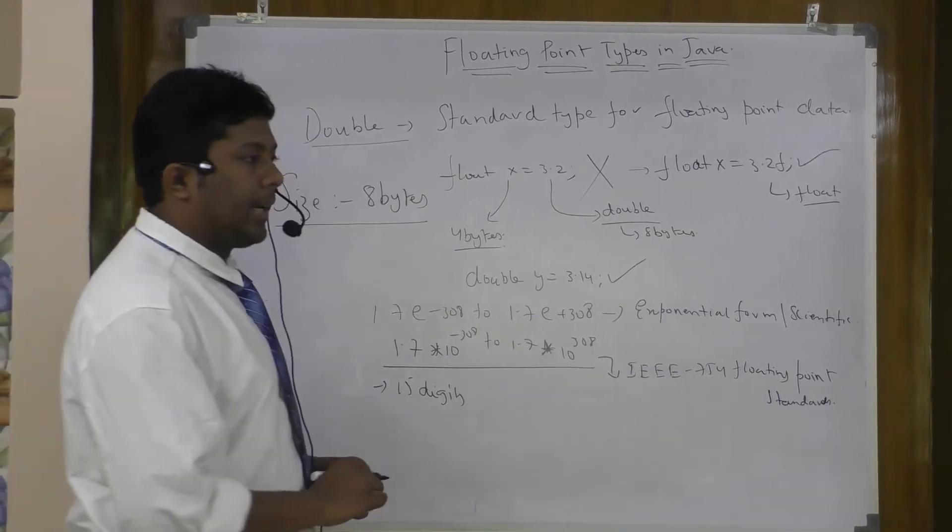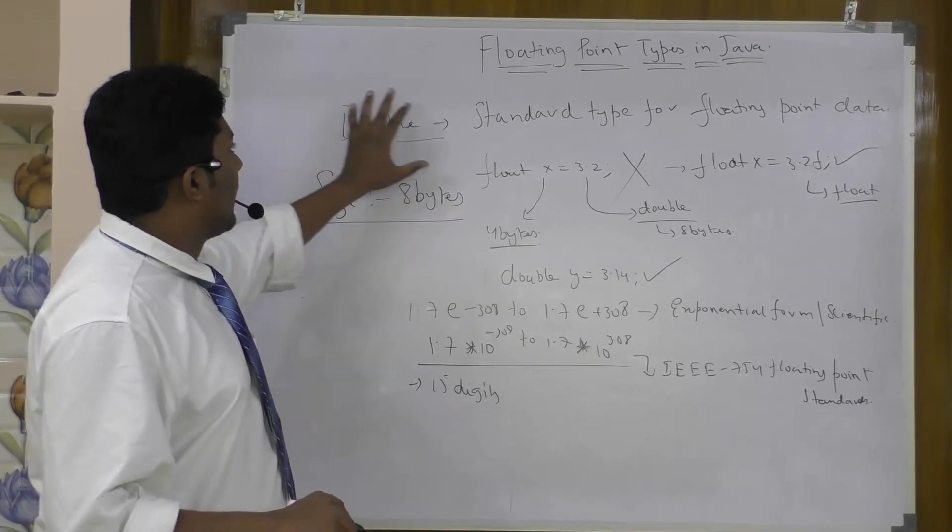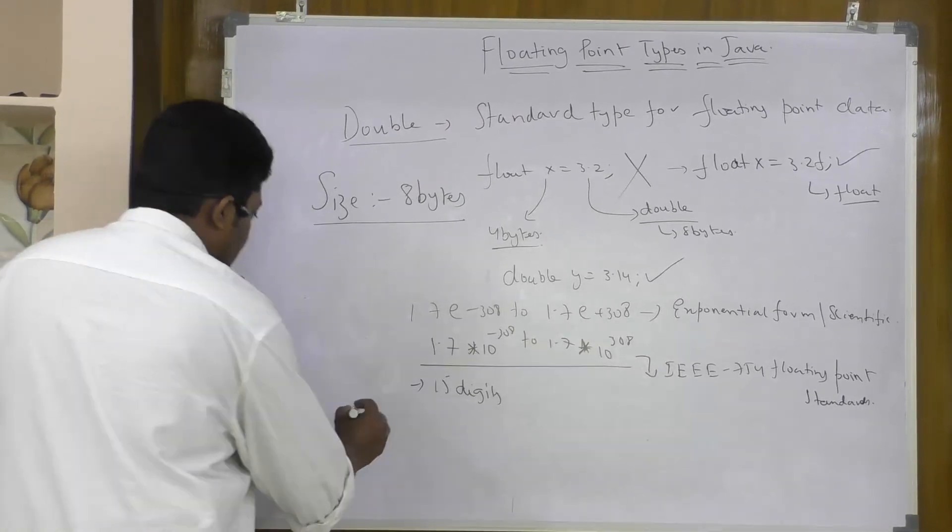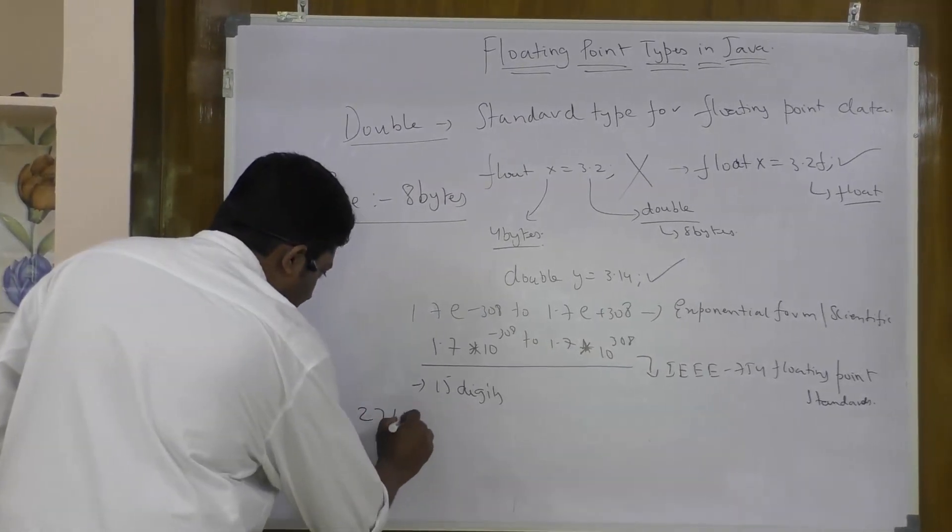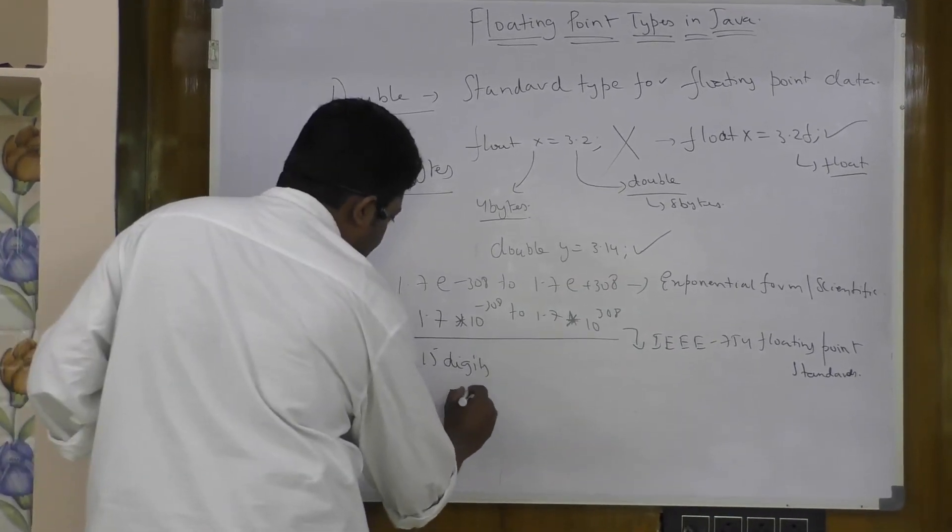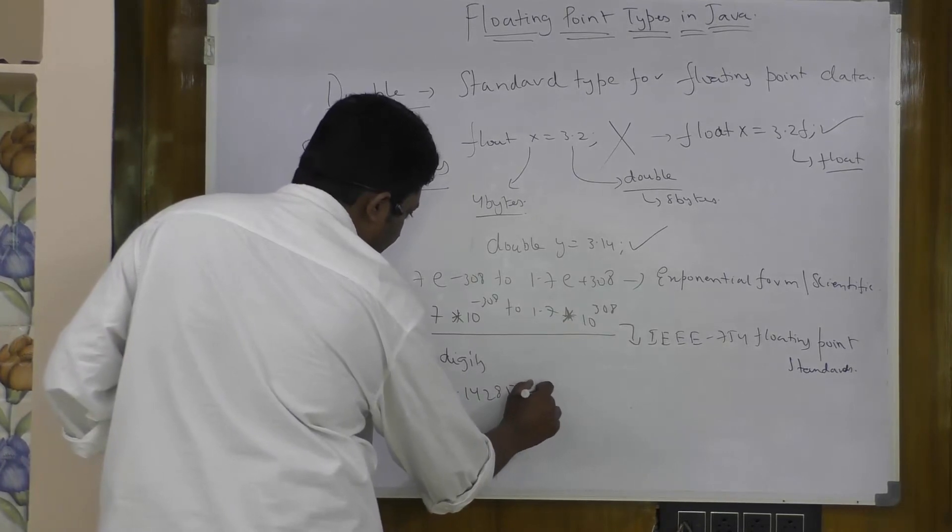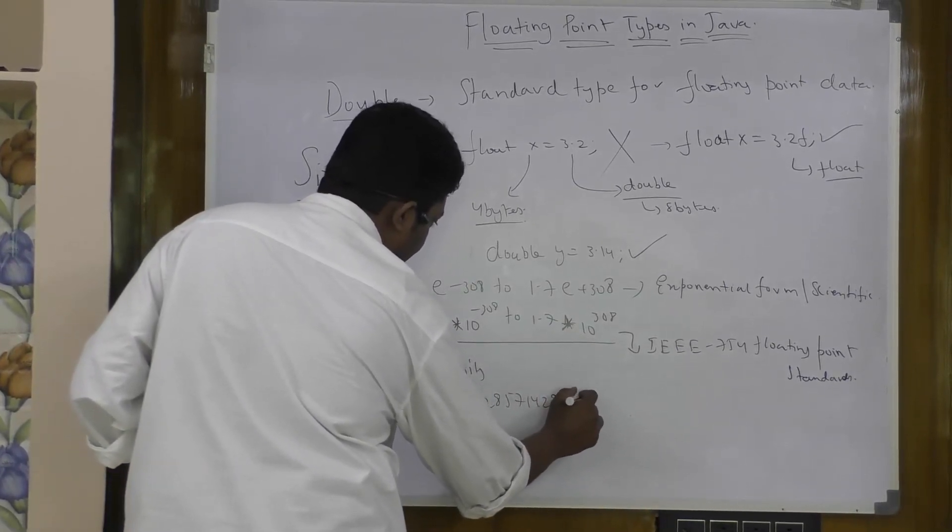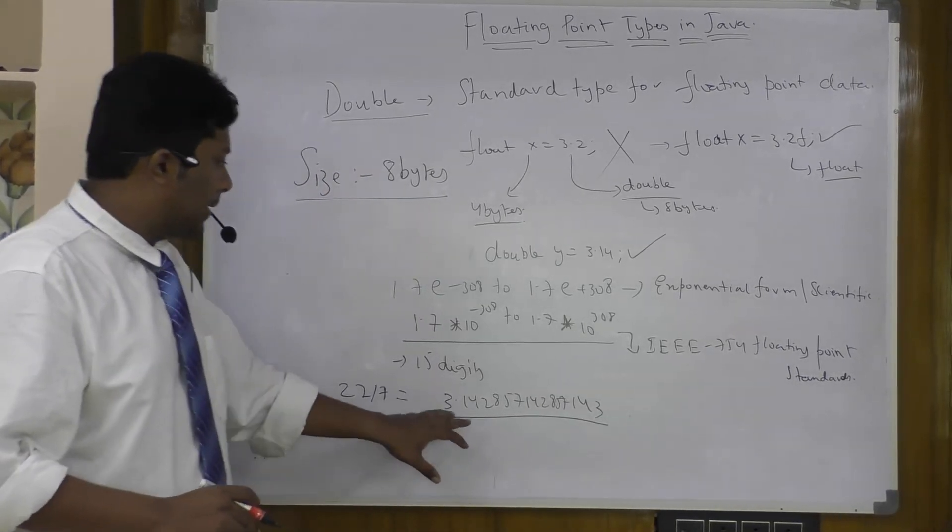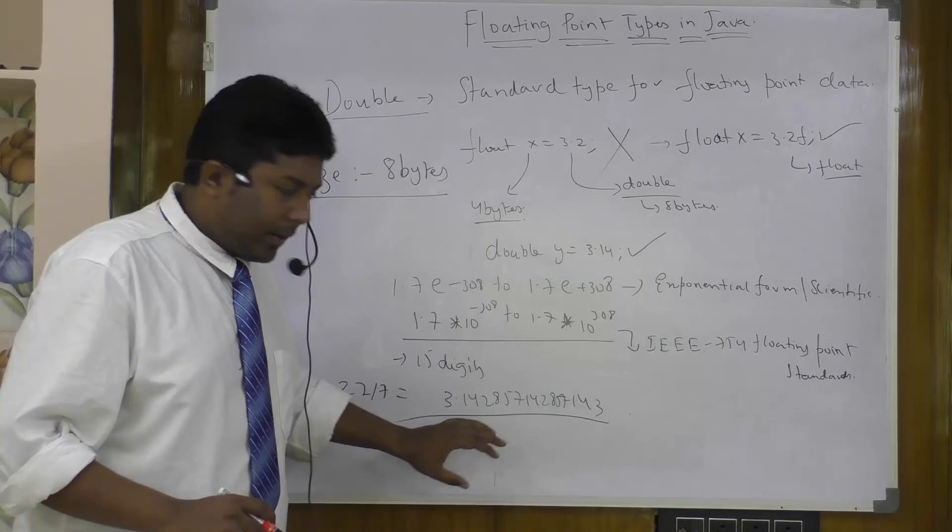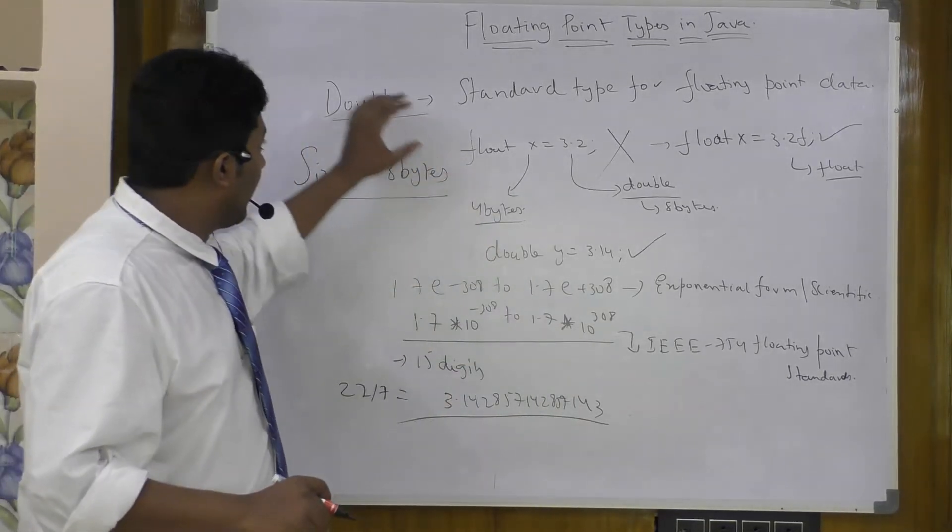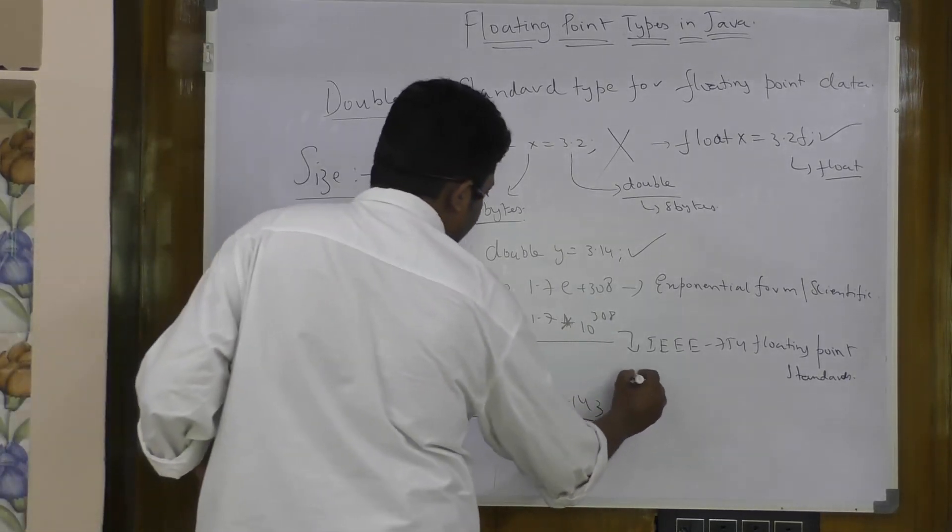The precision value of float is up to 15 digits. This is one of the key reasons which makes the double standard type of floating point data. 15 digits means, so if you are calculating some value like 22 by 7, the actual value is 3.142857142857143. So this is the actual value of this, the accurate value. If you want this much precision or this much accuracy, you need to go for double.